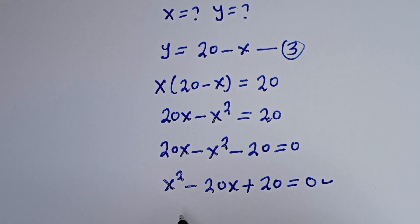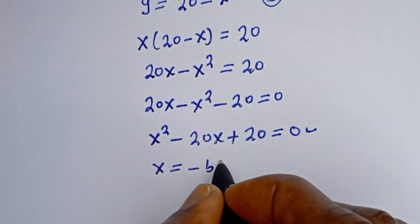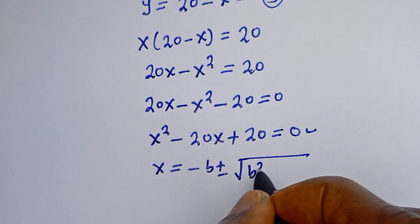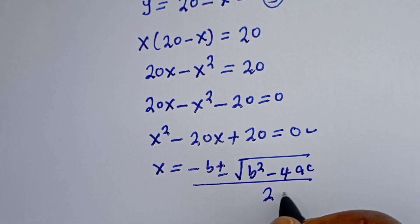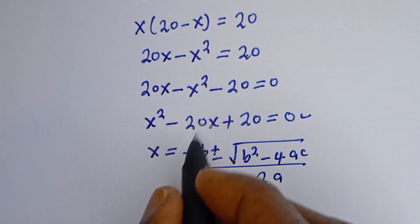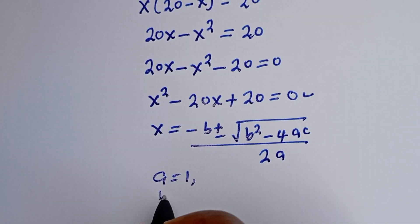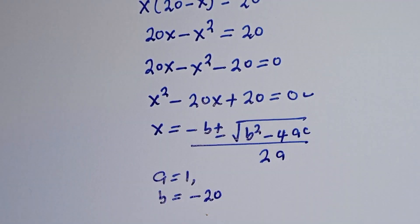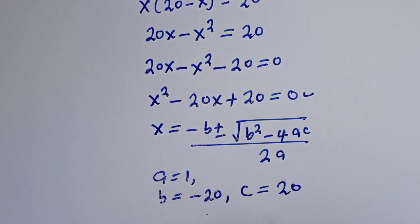The quadratic general formula gives us S is equal to minus B plus or minus square root of B squared minus 4AC, all over 2A. From our equation, A is equal to 1, B is equal to minus 20, and C is equal to 20.